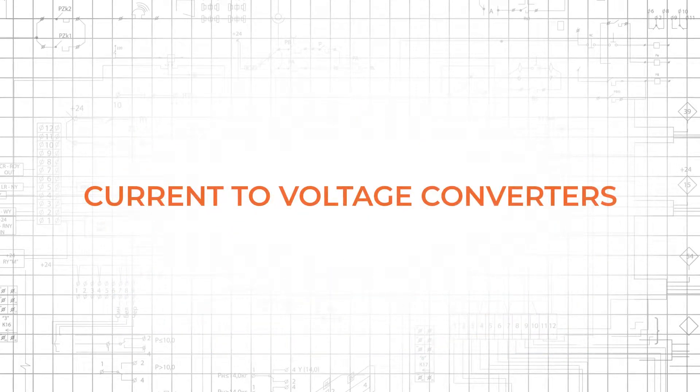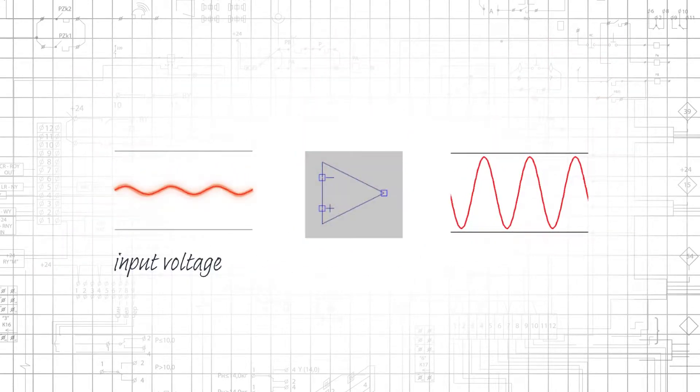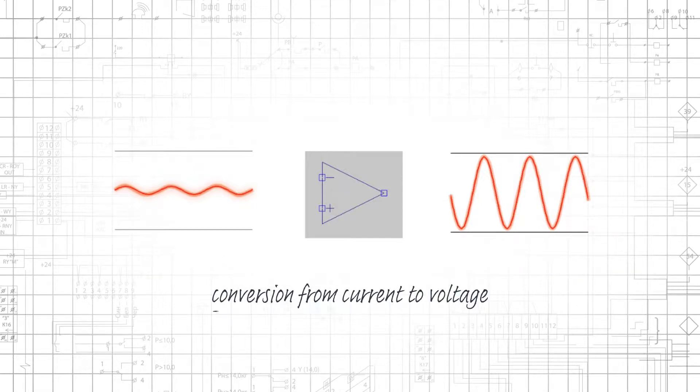We usually think of an amplifier as something that receives an input voltage and produces a higher amplitude output voltage. However, an important variation on this basic amplification scheme involves conversion from current to voltage.